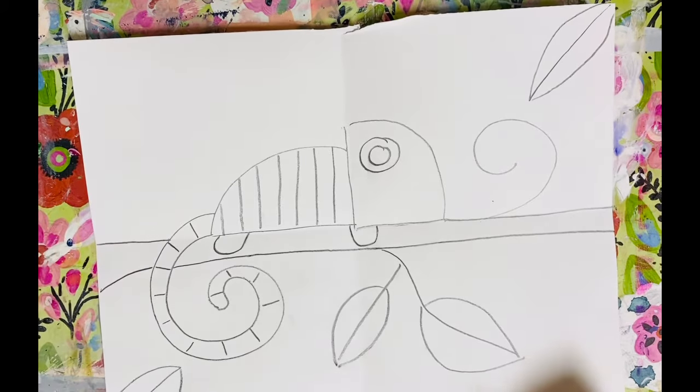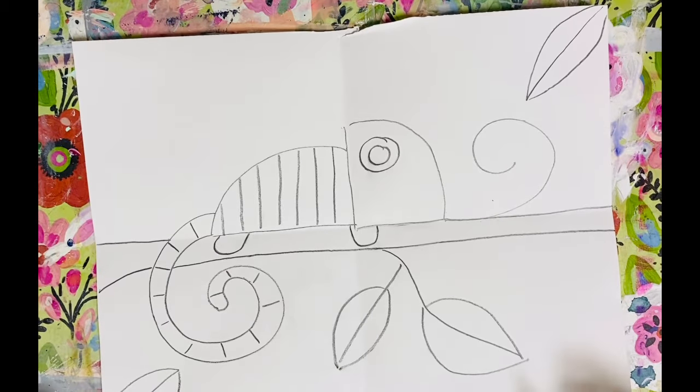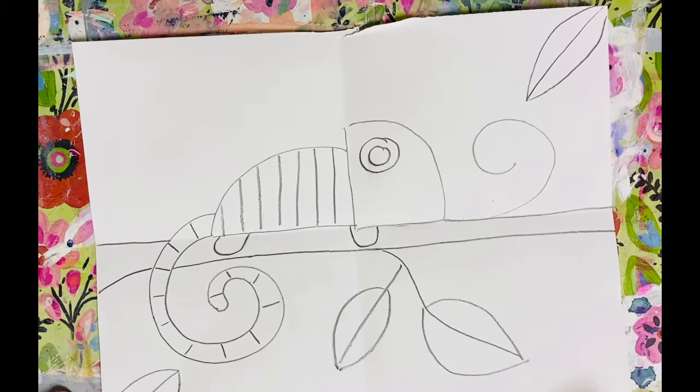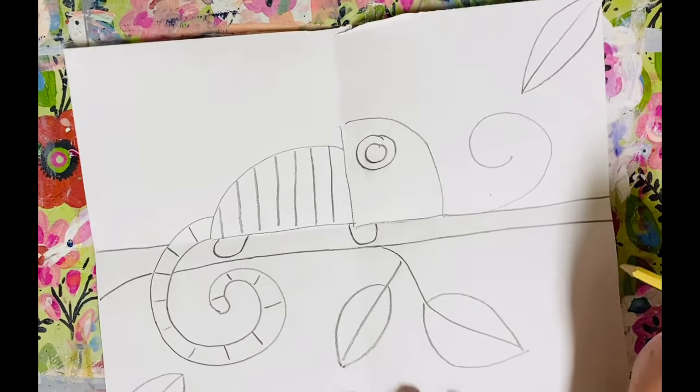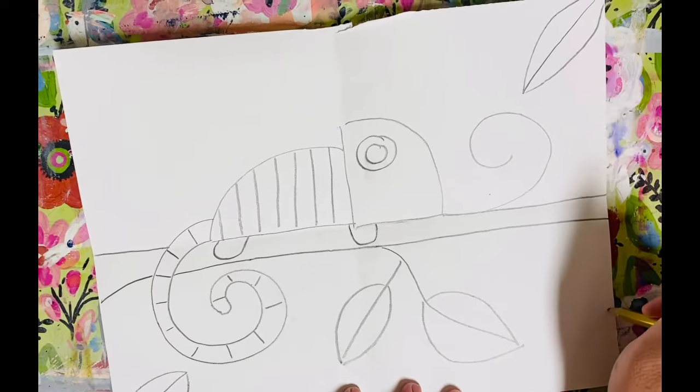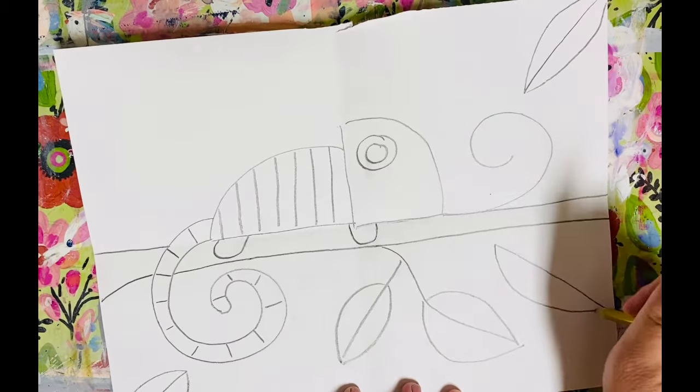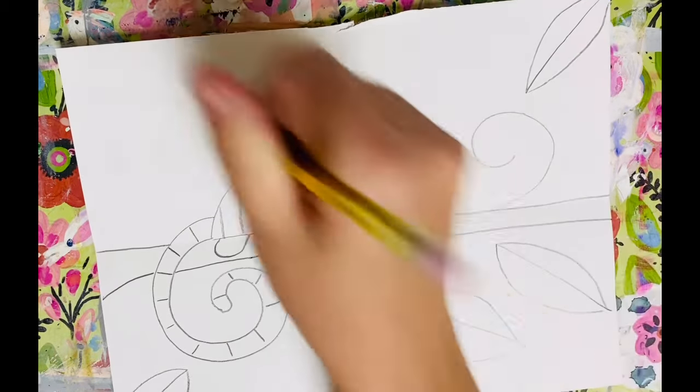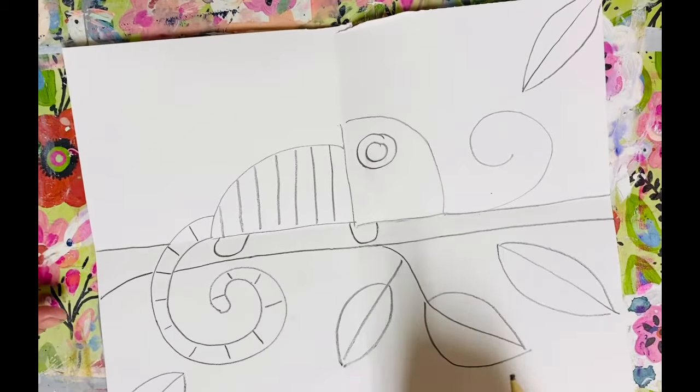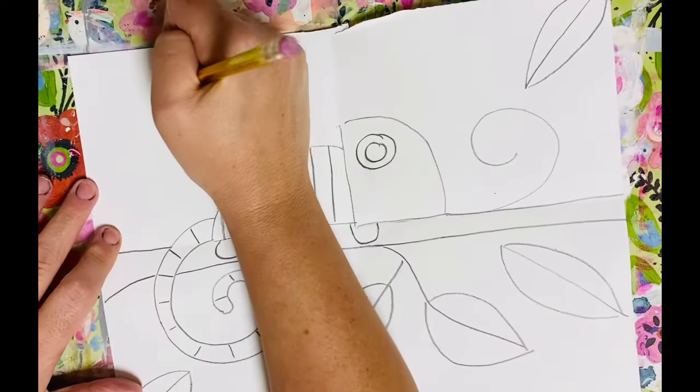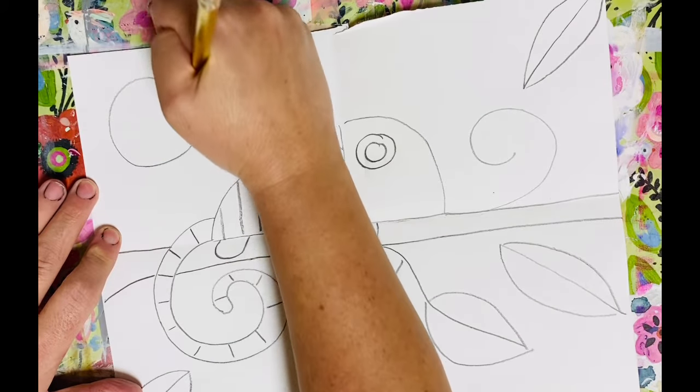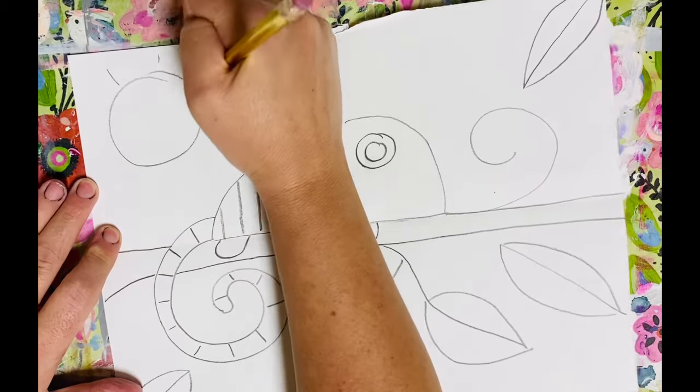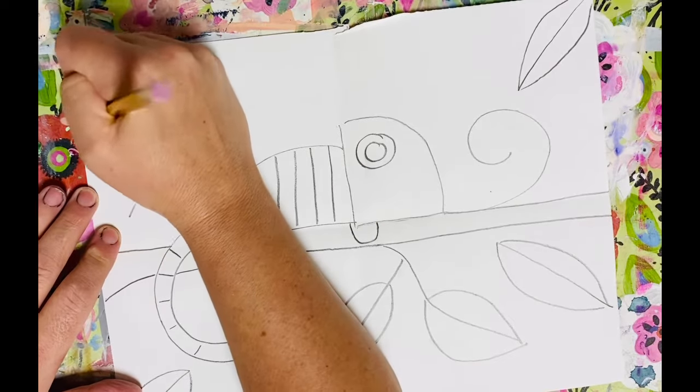All right, so he's all stripey. He's looking pretty good. If you want, you can add some more things in your background, maybe some more leaves. I really like to draw a leaf. So I'm going to draw at least one more leaf. Maybe you'd like to draw a sun like we had in our example picture. So you could draw a circle for the sun here and then just some little rays coming out so it's a nice sunny day.